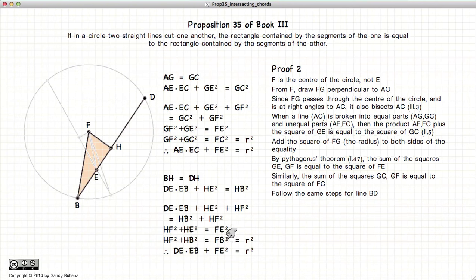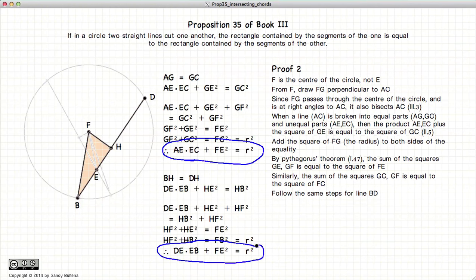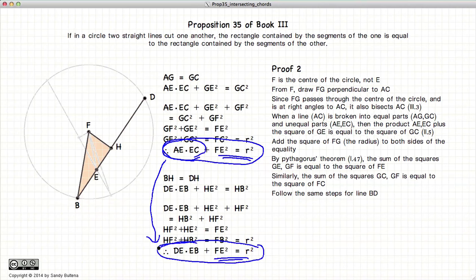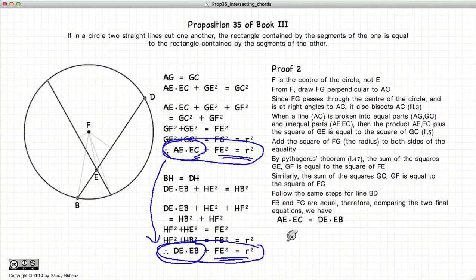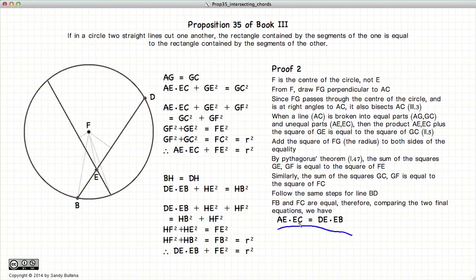We now have two equations: AE times EC plus FE squared equals R squared, and DE times EB plus FE squared equals R squared. Since these two expressions equal the same thing, this means AE times EC must equal DE times EB. And thus we have demonstrated this proposition.